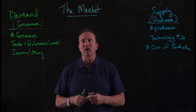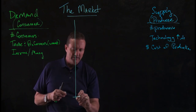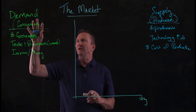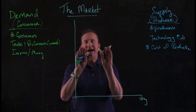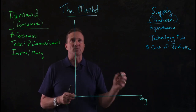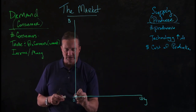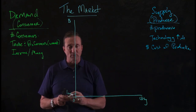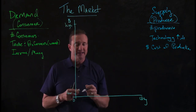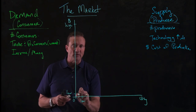Now supply and demand are going to come together to create a market. I want to give you a visual illustration, so I'm going to draw a graph. If you're taking notes, you've got the title of the market, factors of demand, and factors of supply side by side. On the x-axis we've got quantity; on the y-axis we've got price. Down near zero would be a low price; way up top would be a high price. On quantity, a little away from zero would be a low quantity, and way to the far right would be a high quantity.